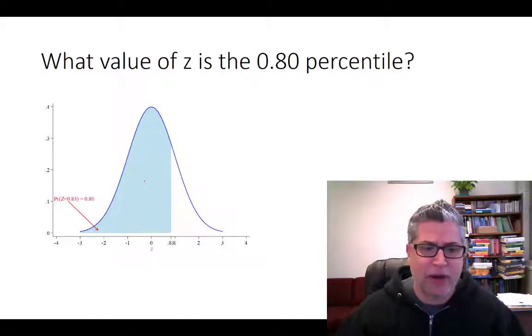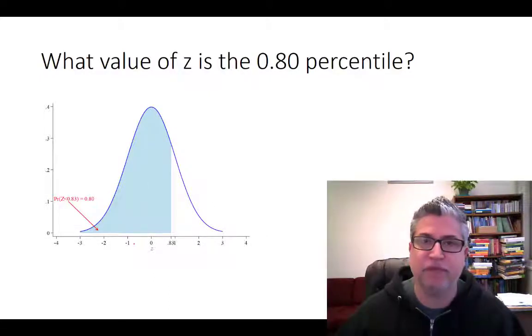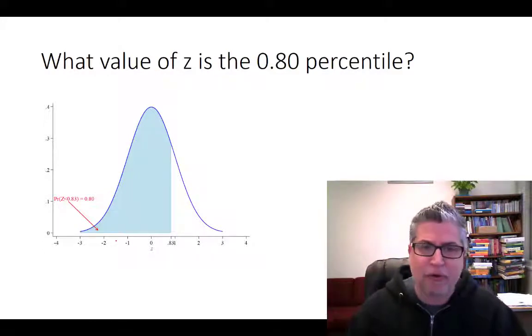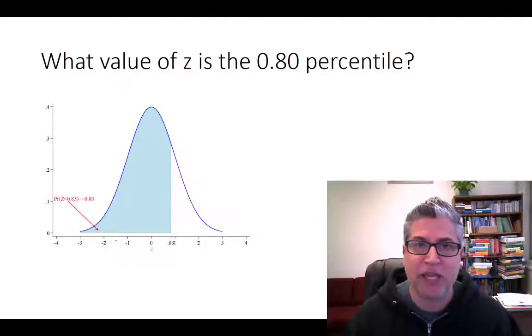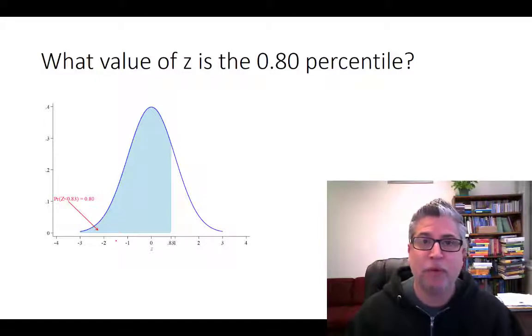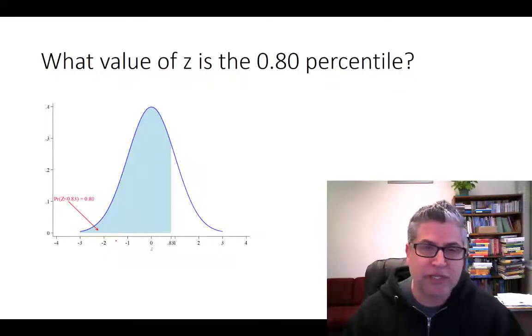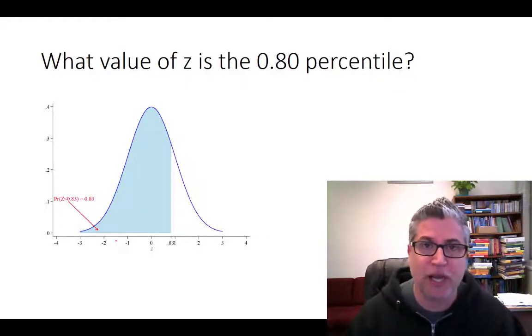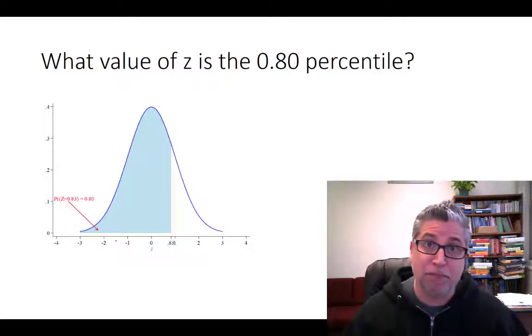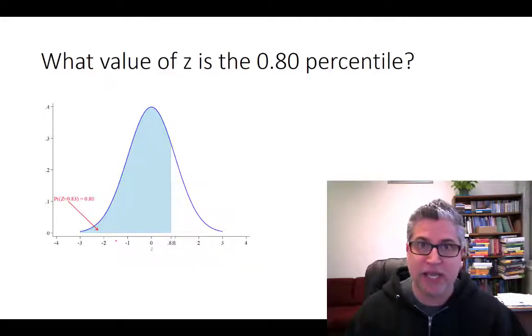Now, this could be a whole lot of work, trying a whole bunch of different candidate values of z just to narrow down what specific number gives you the 80th percentile. That could be a real pain. But there is a far more elegant way of doing this, and that's to use Excel's built-in statistical functions to answer this question. So let's turn to Excel right now and see how that's done.